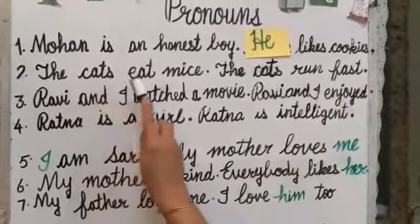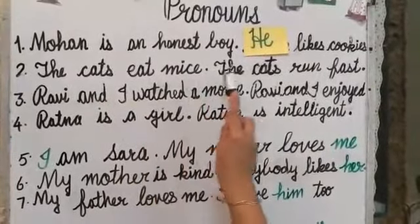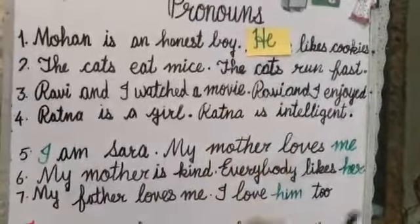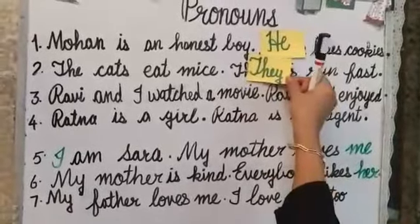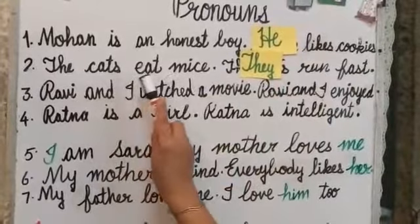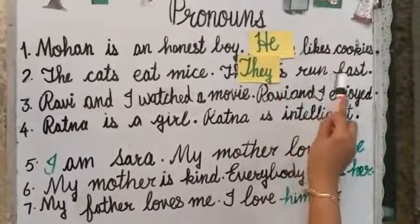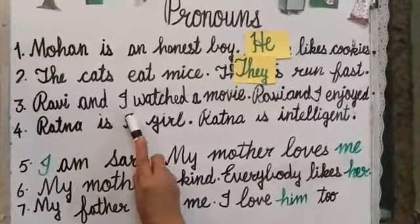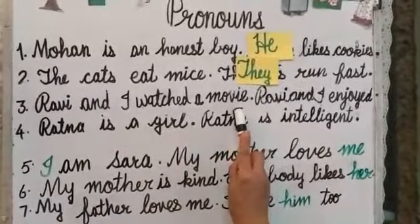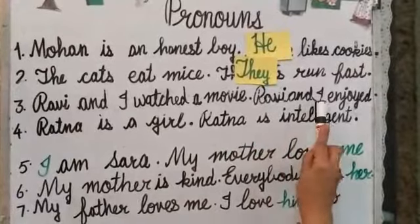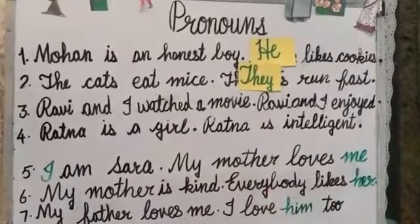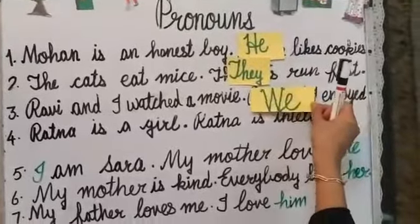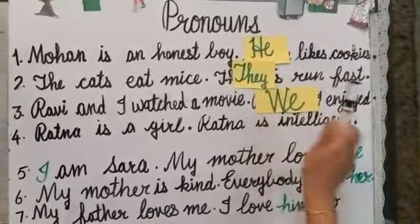The cats eat mice. The cats run fast. In the place of 'cats', we have to use 'they'. The cats eat mice. They run fast. Ravi and I watched a movie. Ravi and I enjoyed. In the place of 'Ravi and I', we have to use 'we'. We enjoyed.